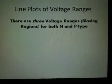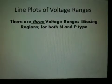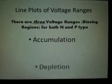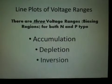There are three voltage ranges, or biasing regions, for both N and P-type, which are accumulation, depletion, and inversion.